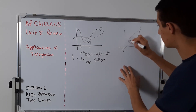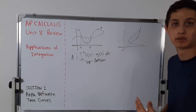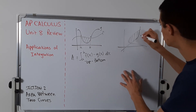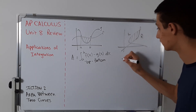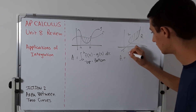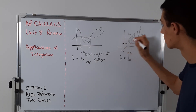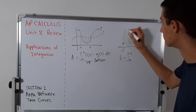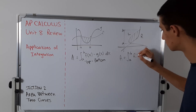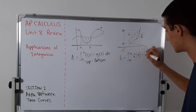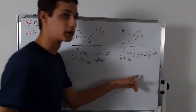They might give you these in terms of functions of y — you just have to make sure you know what variable you're talking about. What you're going to do is take the right function minus the left function. So the area would be from a to b, where a and b are the y-values, integrating the right function minus the left function with respect to y — dy.